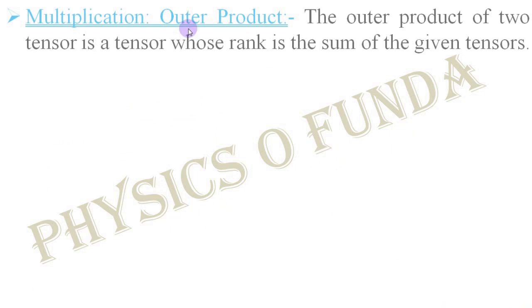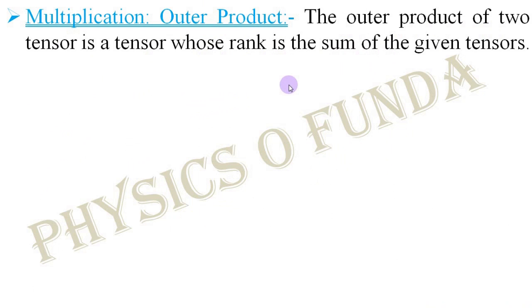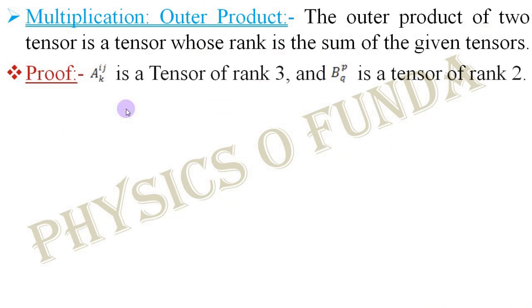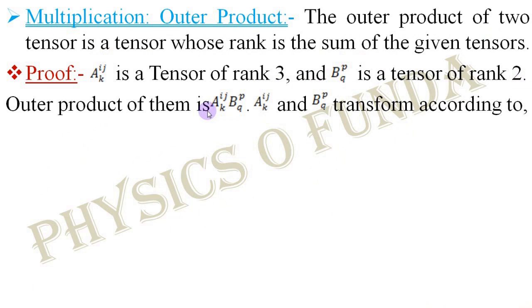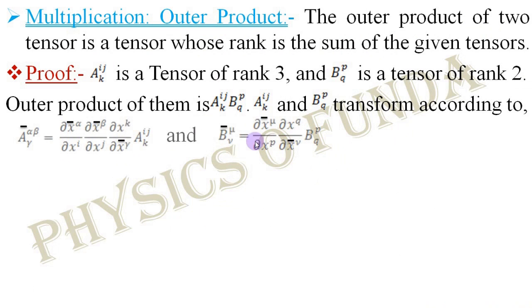Now we consider the multiplication between two tensors. The first one is outer product. One postulate regarding outer product is that the outer product of two tensors is a tensor whose rank is the sum of the ranks of the given two tensors. Let us consider two tensors A and B of rank 3 and 2 respectively. Both are mixed tensors. The outer product of them and the given tensors can be transformed in the barred coordinate system according to these two equations.